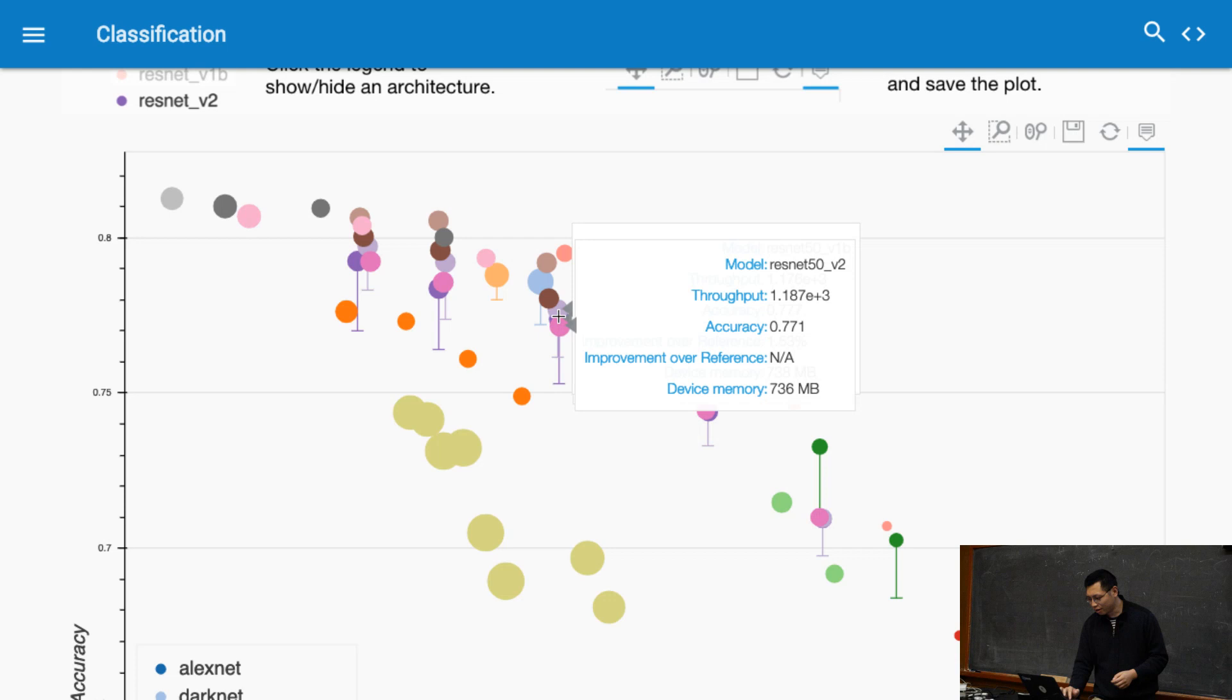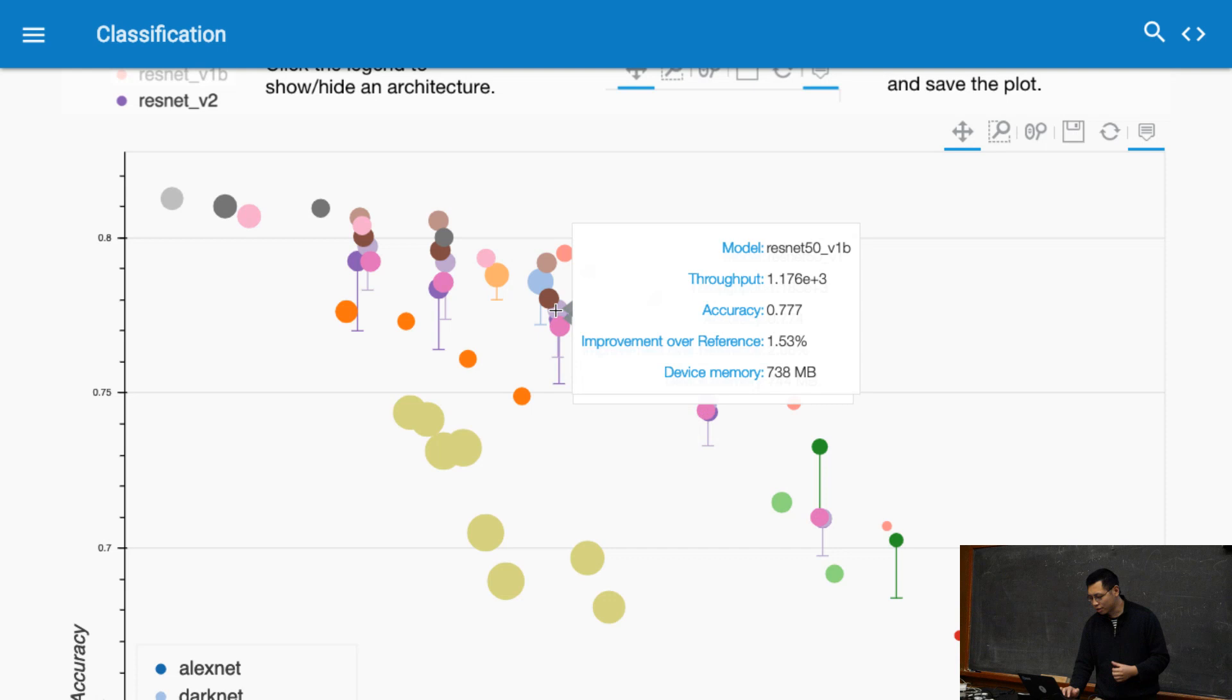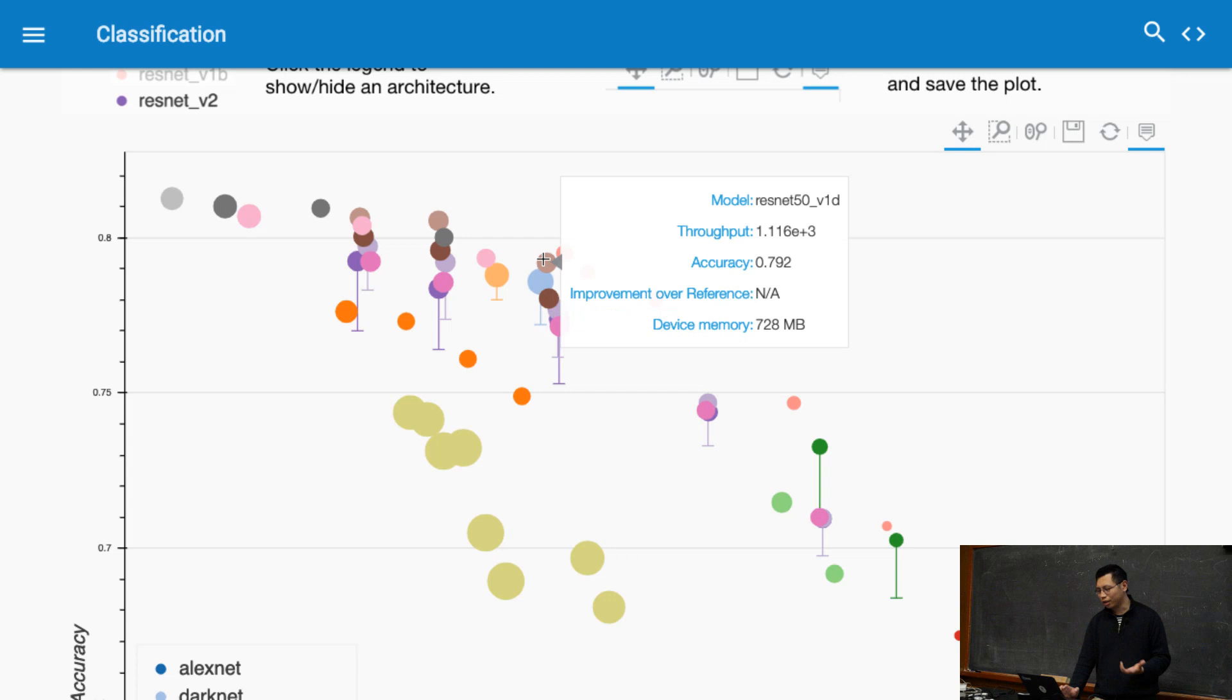Adding a bunch of tricks, you can improve the accuracy from almost like 75 plus to 77, 78, from 75 to 77, like 2%. That means all our paper in CVPR, if we improve the network by so much. The tricks actually improve the accuracy a lot.